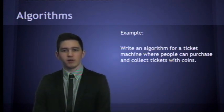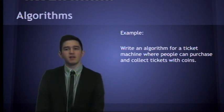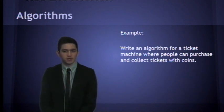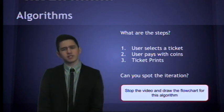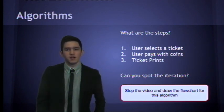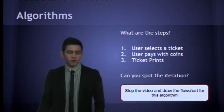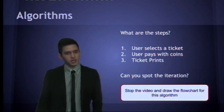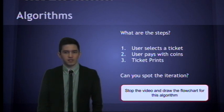Let's have an example. Write an algorithm for a ticket machine where people can purchase and collect tickets with coins. So, what are the steps? First of all, you're going to have to let the user select the ticket they want to buy. Then the user will have to pay with coins. Now, you're probably going to put more than one coin in.